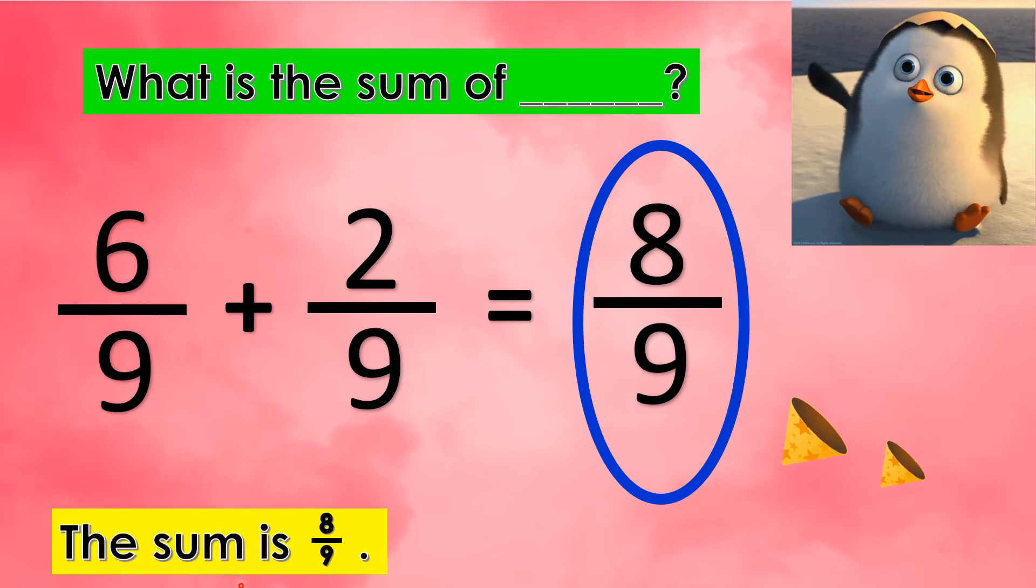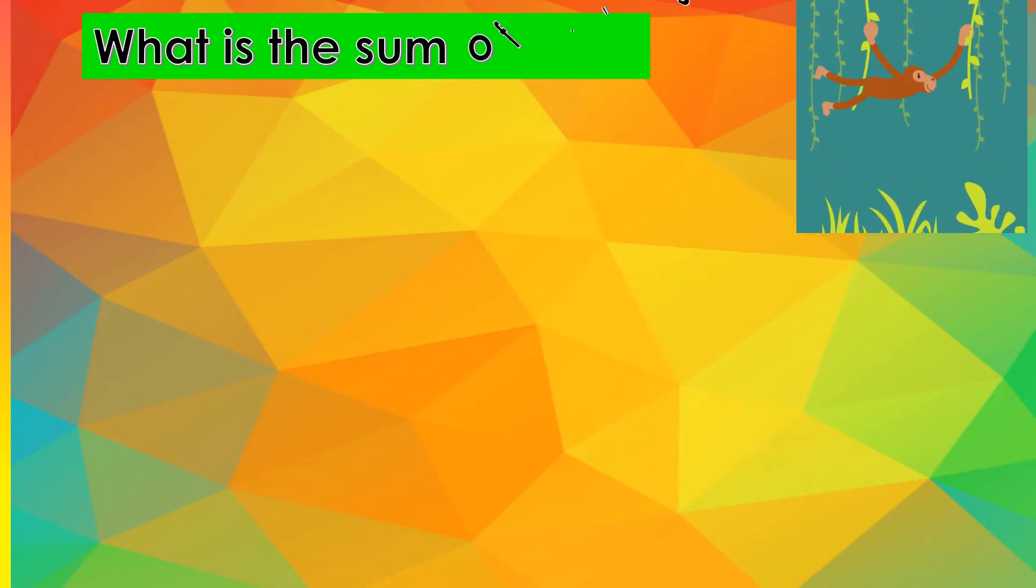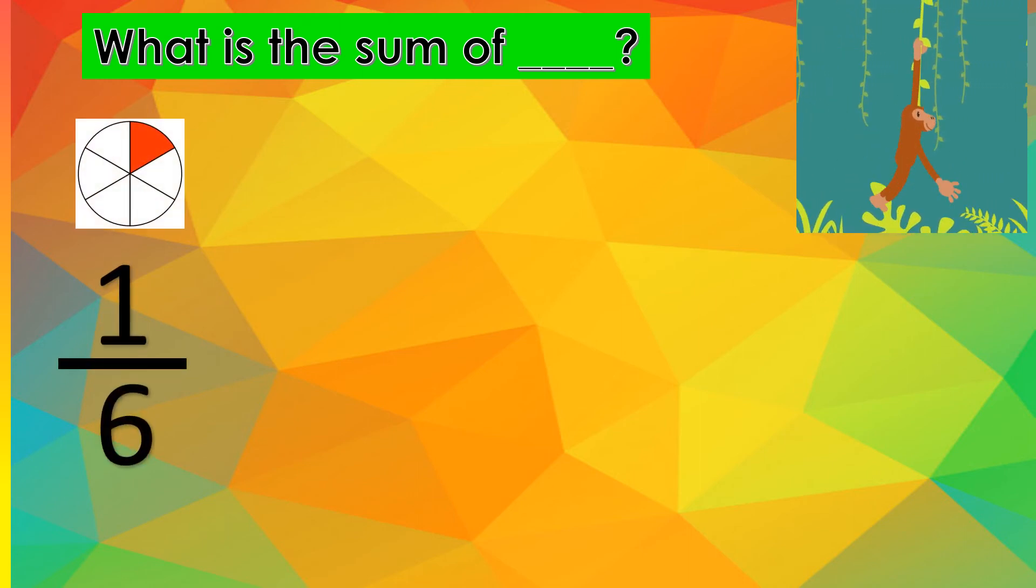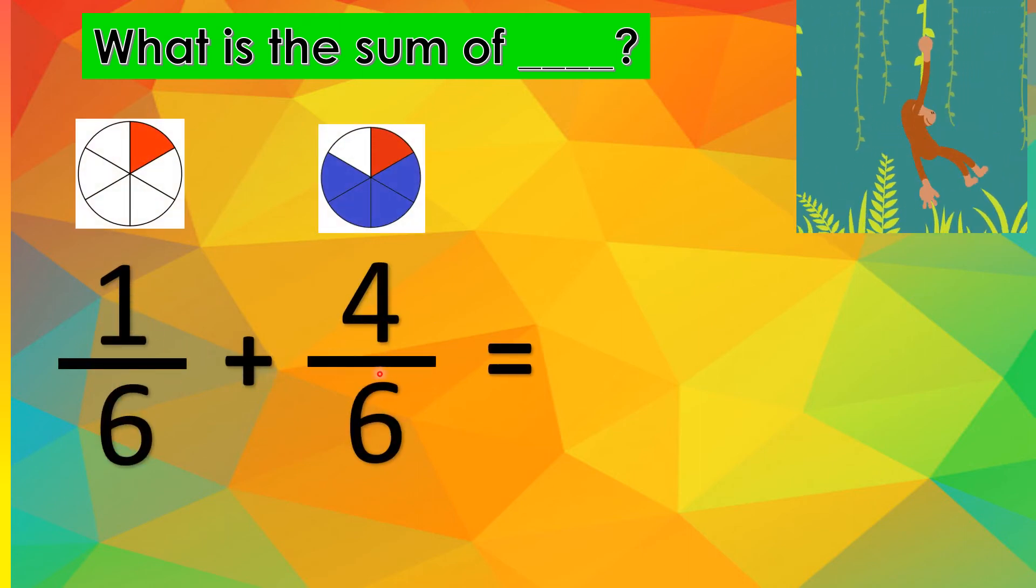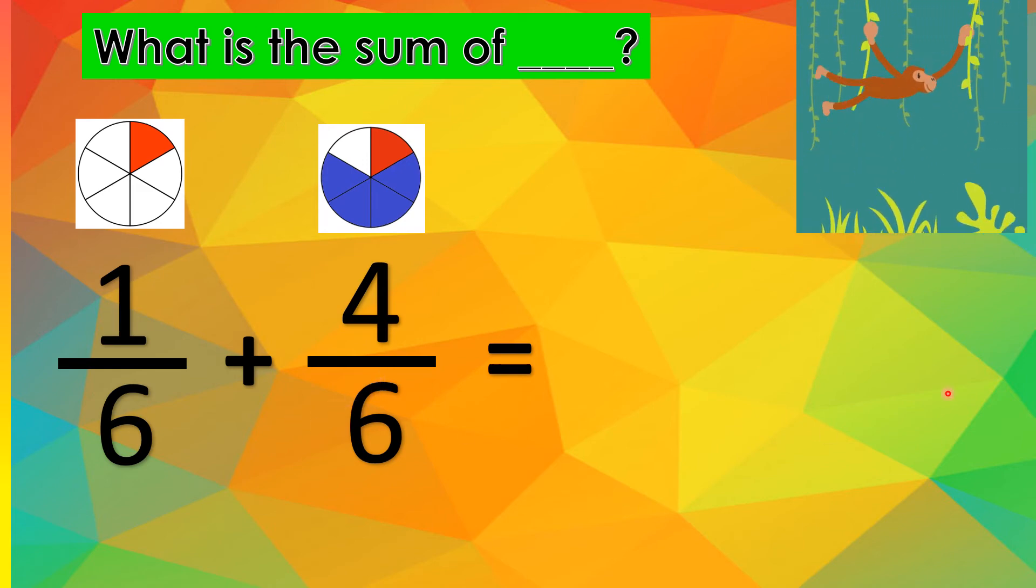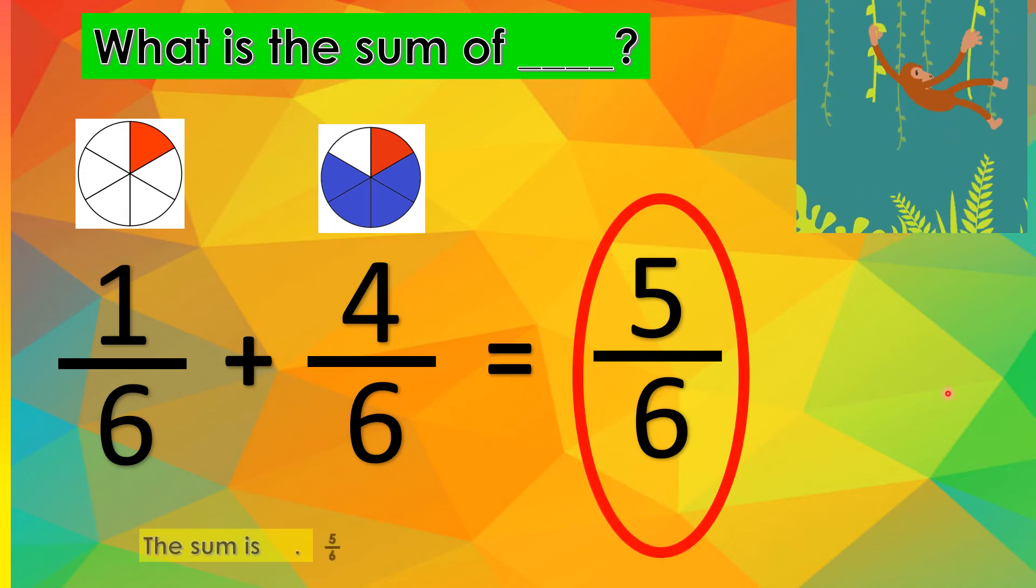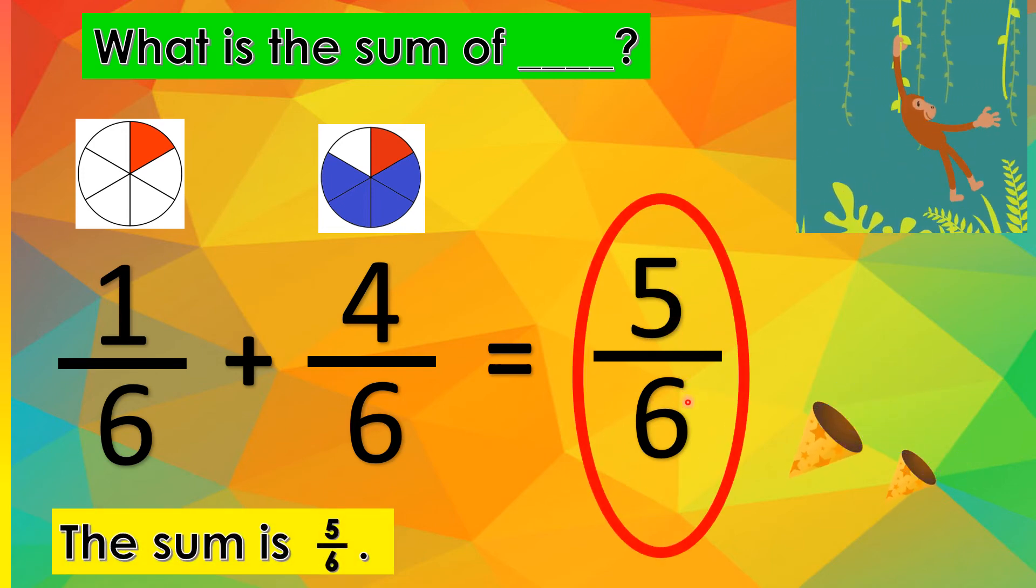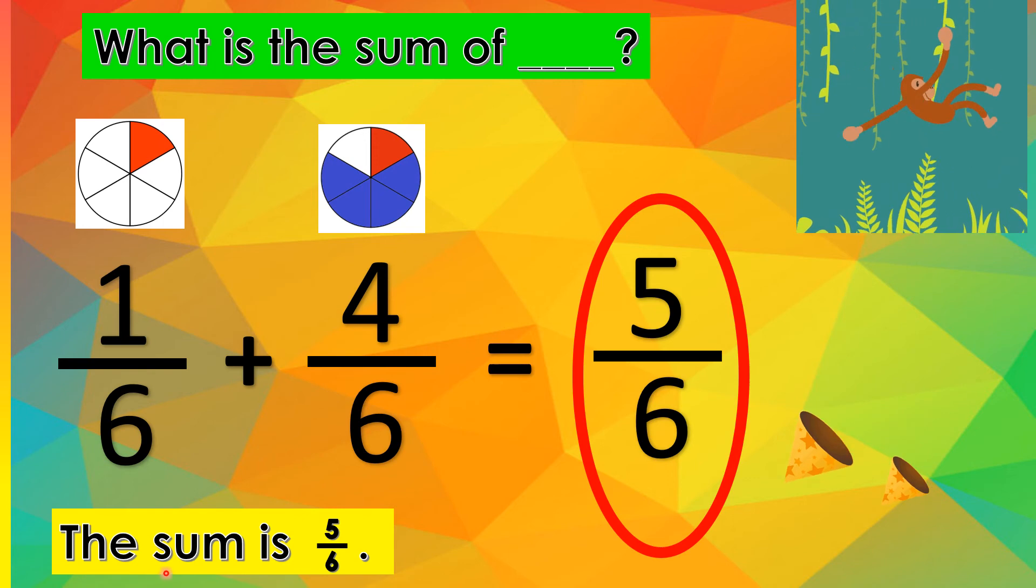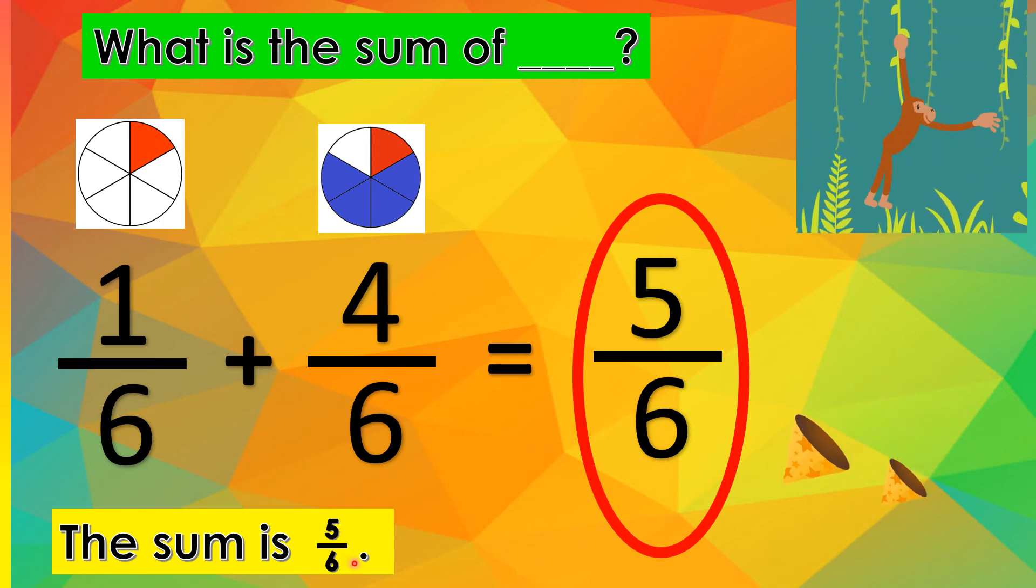8 ninths. Let's read the whole answer. The sum is 8 ninths. What is the sum of 1 sixth plus 4 sixths? Solve for it. 1, 2, 3. The correct answer is 5 sixths. Let's say it. The sum is 5 sixths.